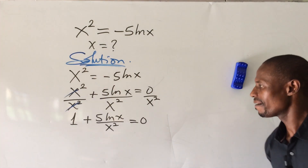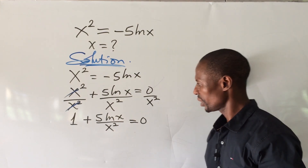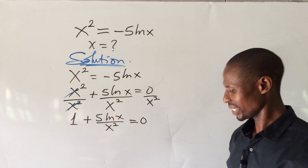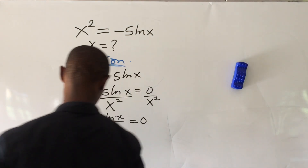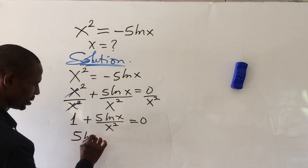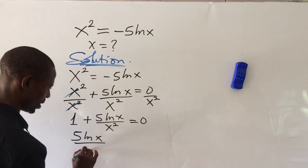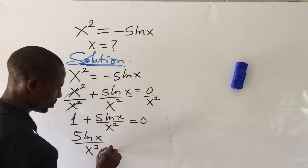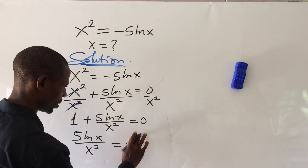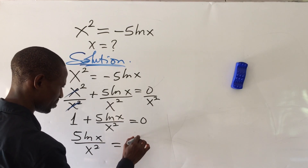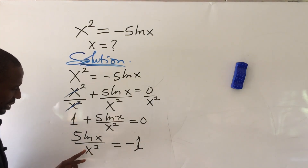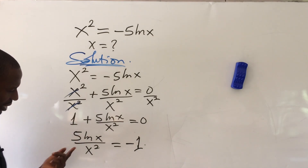Now we move the 1 to the right-hand side of the equation, so our equation becomes 5 ln(x) all over x squared equal to minus 1.